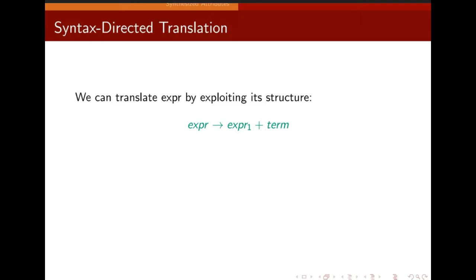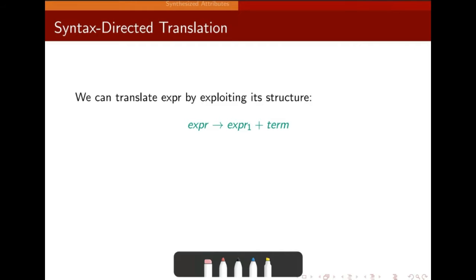We can translate an expression by exploiting its structure. The exploiting is basically done by evaluating the structure. If you have this and you know what value it can give you, then you can just translate. This is what we call translation — you can translate the value of this.